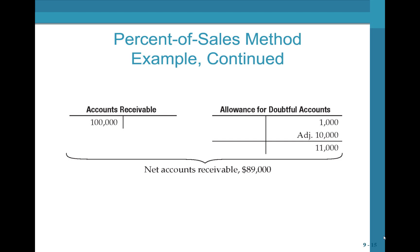If we started with $100,000 in AR and increased the allowance by $10,000 — and if we already had a balance of $1,000 in the allowance for doubtful accounts — this would give us a balance of $11,000 in the allowance for doubtful accounts, and net AR would be $89,000.